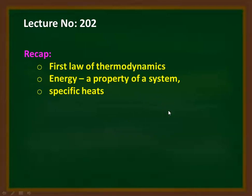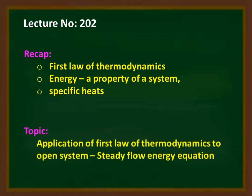We recap from the previous lecture. In lecture 201 on the First Law of Thermodynamics, we discussed the First Law of Thermodynamics, proved that energy is a property of the system, and discussed specific heats: specific heat at constant volume and specific heat at constant pressure. The topic for this lecture is the application of the First Law of Thermodynamics to open systems, and we are going to derive the steady flow energy equation.